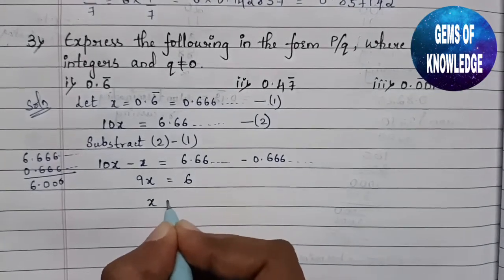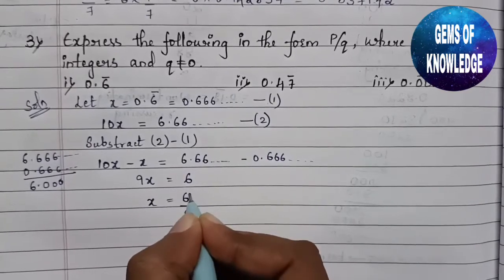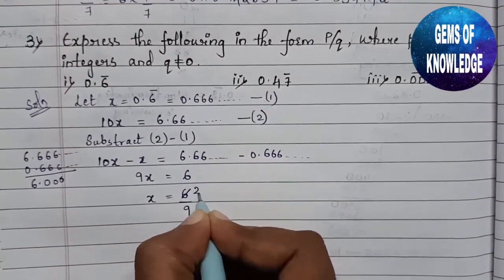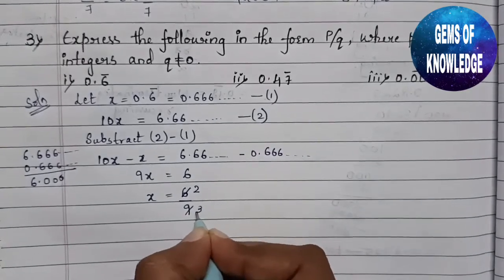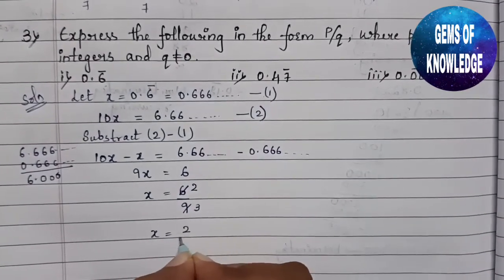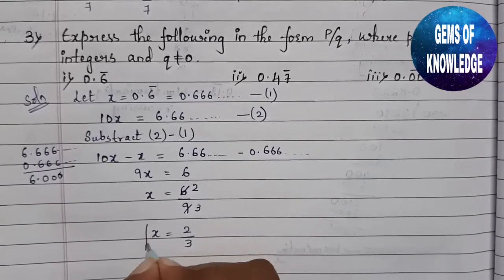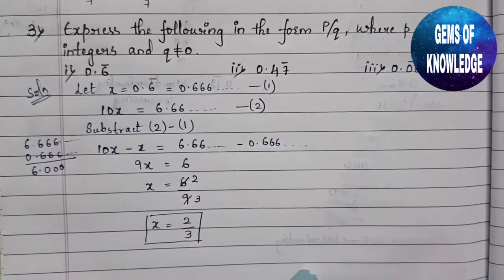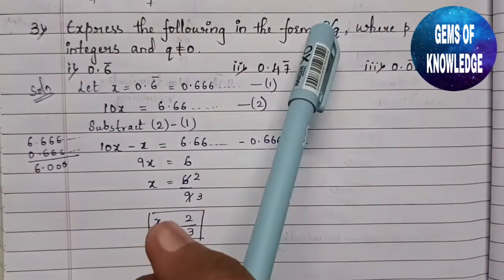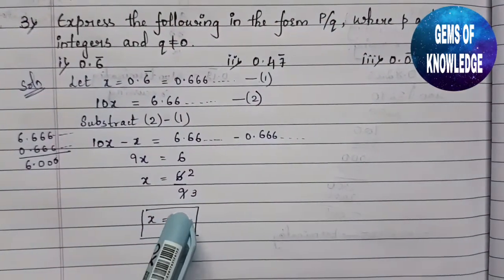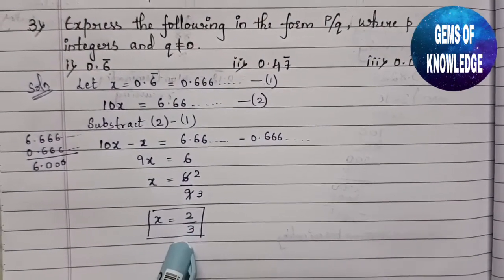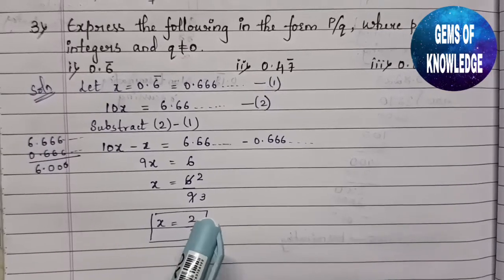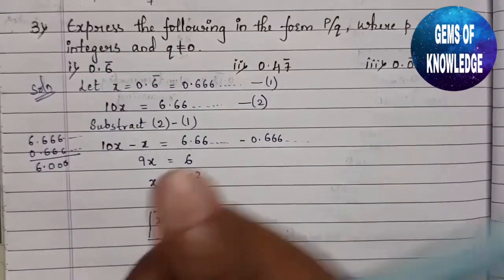So 9x equals 6, which means x equals 6 divided by 9. Simplifying by dividing both by 3: 3 twos are 6 and 3 threes are 9, so x equals 2 by 3. This is in the form p by q, where p and q are both integers and q is not equal to 0. That was the first question.